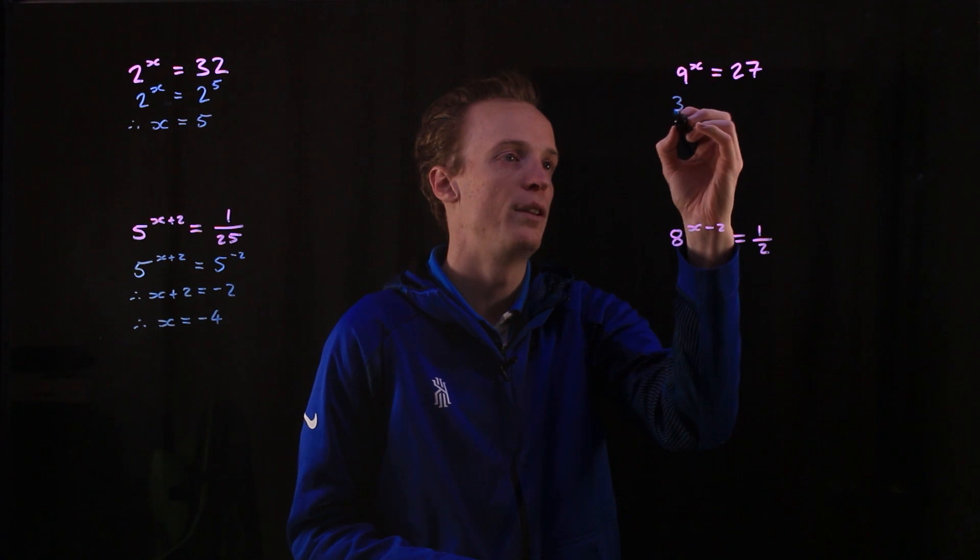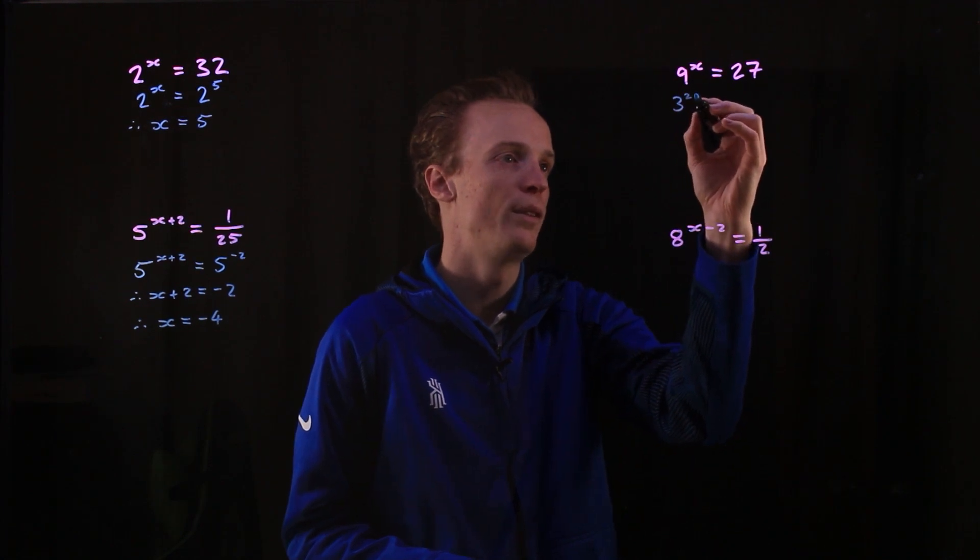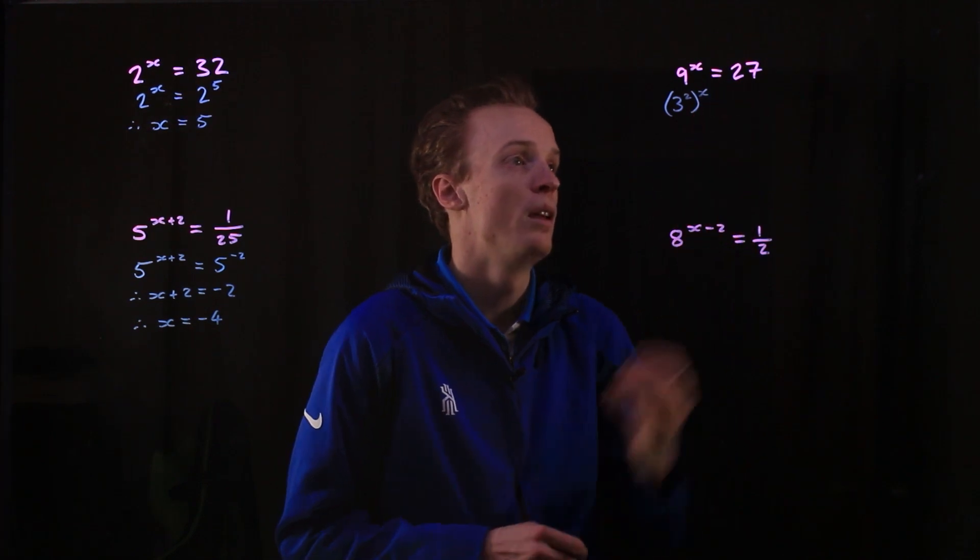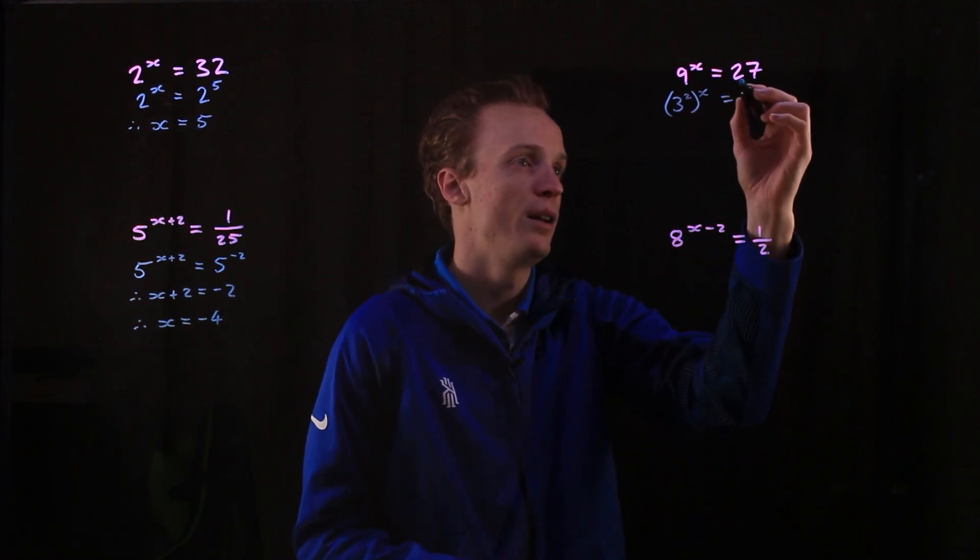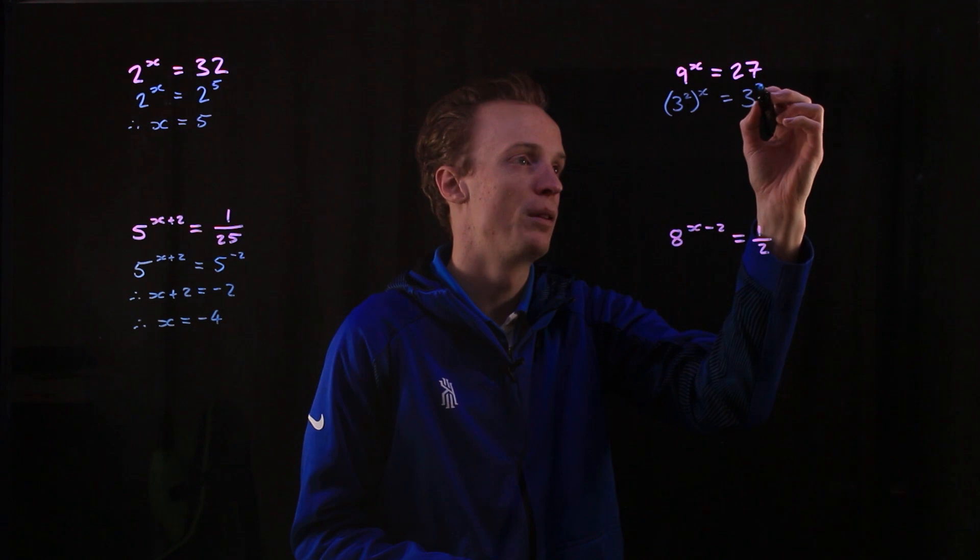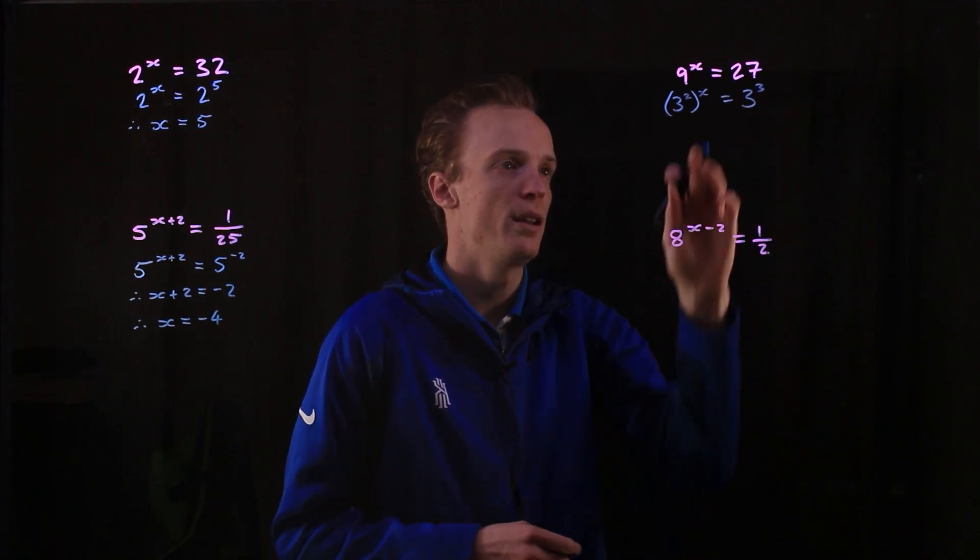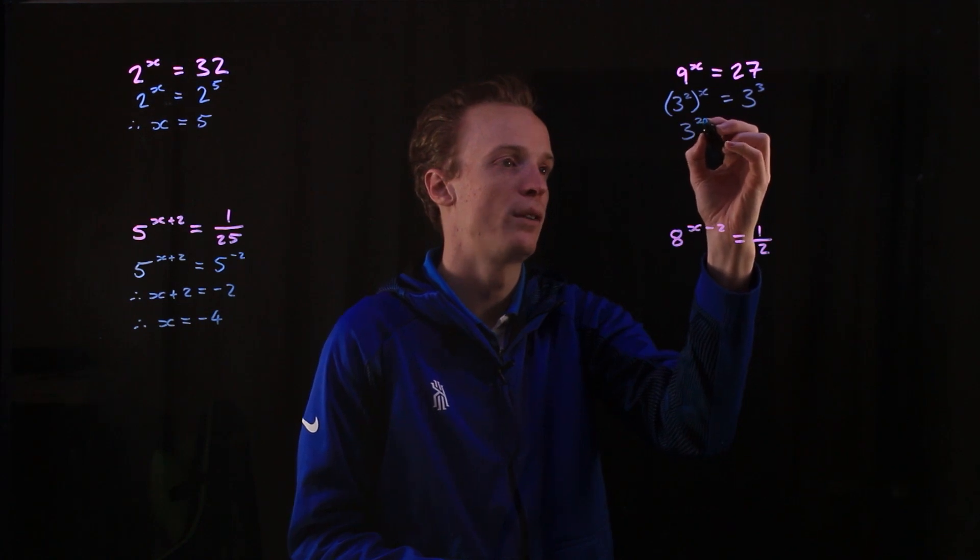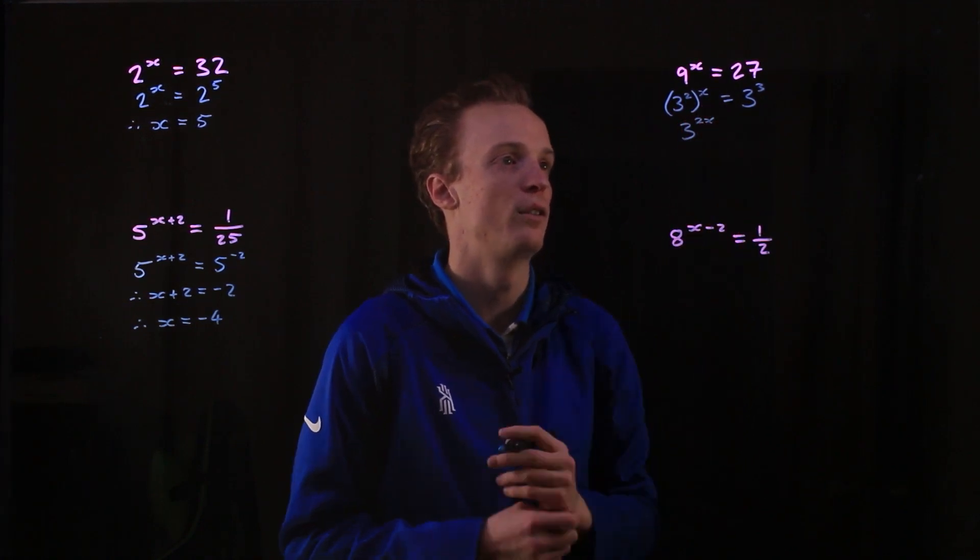So if I now look at rewriting this, this will be 3 squared. But of course, that still has to multiply my x up here. And over on this side, 27 is 3 cubed. So I can now rewrite this to say, well, this is going to be 3 to the 2x, because multiplying the two indices, is equal to 3 to the power of 3.